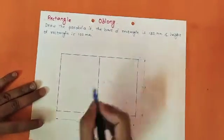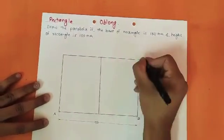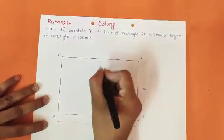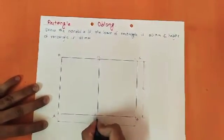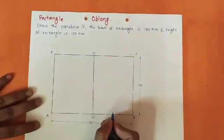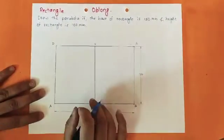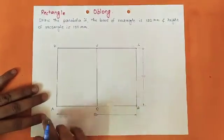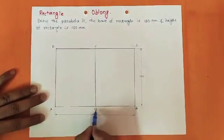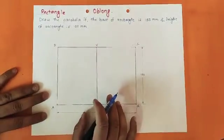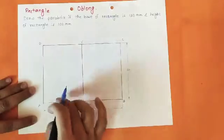First, give naming to the rectangle as ABCD, and name the vertical dividing line as VO. Now we will focus on only one part of the rectangle — the left half, which is rectangle AOVD.